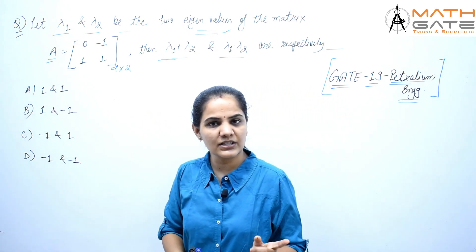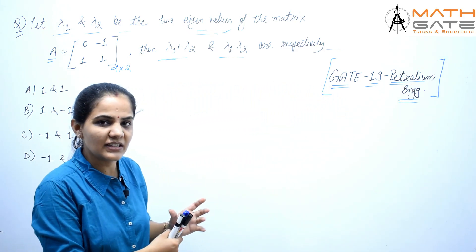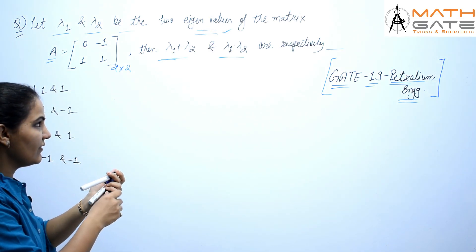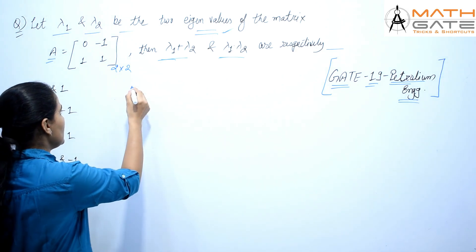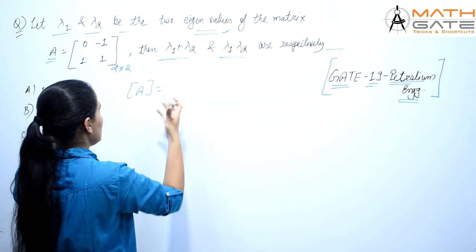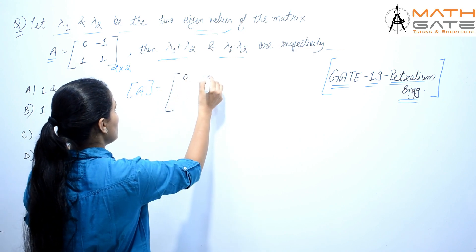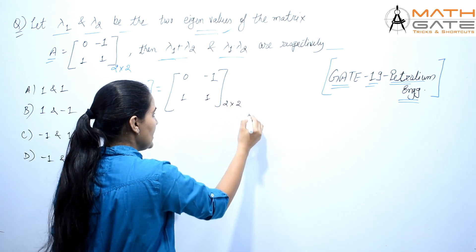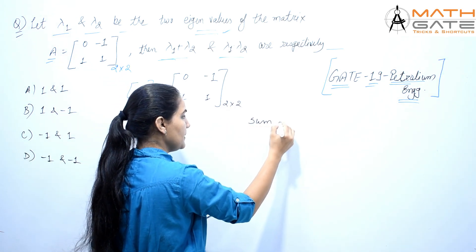Let's go to the question now. Lambda 1 and lambda 2 are two eigenvalues of matrix A. This matrix A is a 2×2 matrix with values [0, -1; 1, 1]. The very basic thing, the first thing we have to do is...